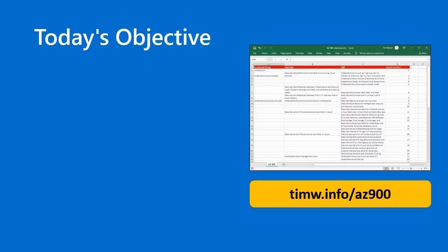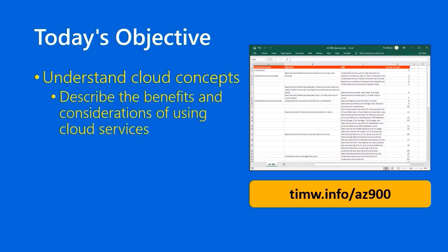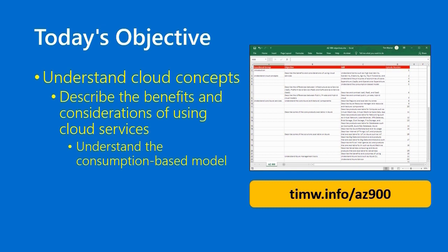Today's objective in the AZ-900 objective domain starts with the functional group Understand Cloud Concepts, passes into the objective Describe the benefits and considerations of using cloud services, and terminates with the granular skill Understand the Consumption-Based Model. If you want a copy of my spreadsheet that shows all of these exam objectives laid out, go to timw.info/AZ-900. That will take you into one of my GitHub repositories, which contains the file.